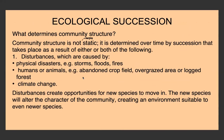Disturbances can be things like physical disasters — storms, floods, fires, landslides. It can be human or animal disturbances, like abandoned crop fields, overgrazed areas, or forests that have been logged. It can also be caused by climate change. They create new opportunities for new species to move in, species that were never there before, and these species will alter the character of the community and create an environment suitable to even more new species.